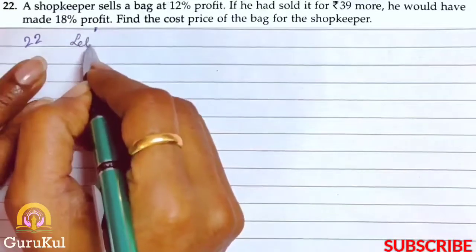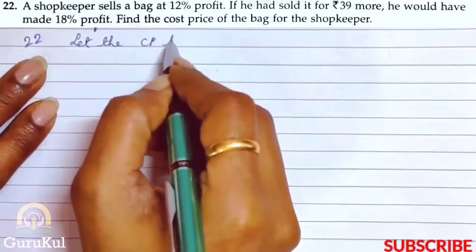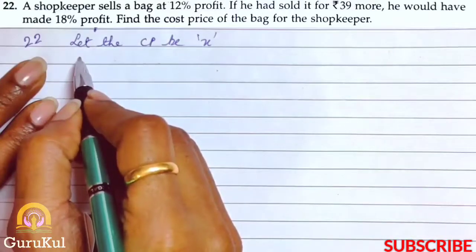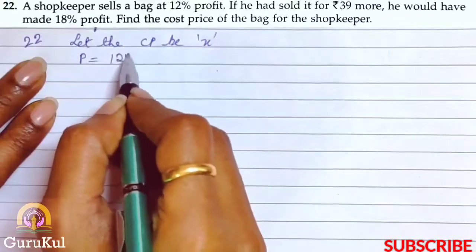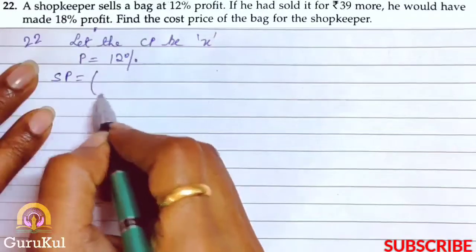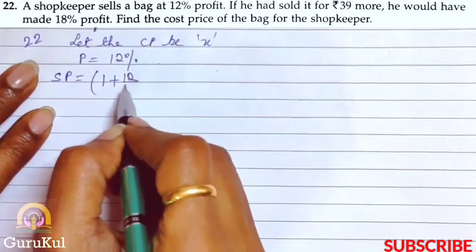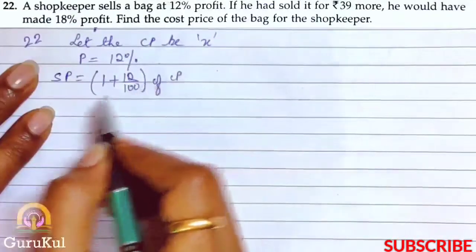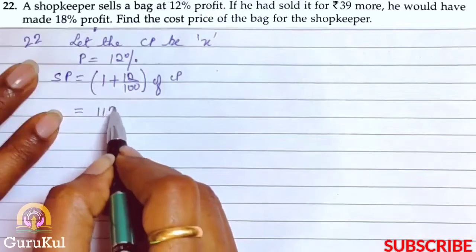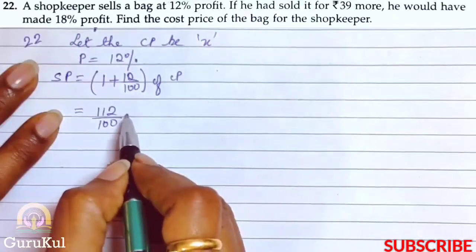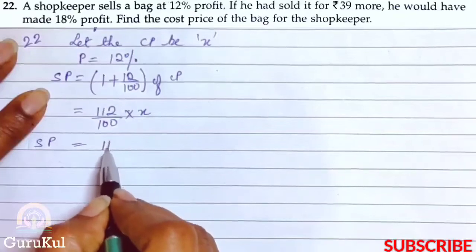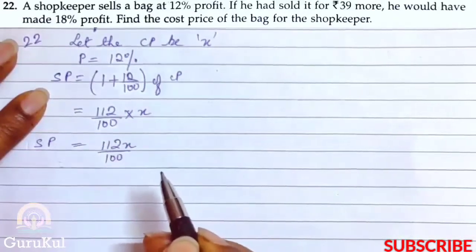Let the cost price be x. In the first case, the shopkeeper made a profit of 12%. So SP is equal to bracket 1 plus profit percent bracket closed of CP. This is the formula. So this will be 112 by 100 into x. Therefore first SP is 112x by 100.